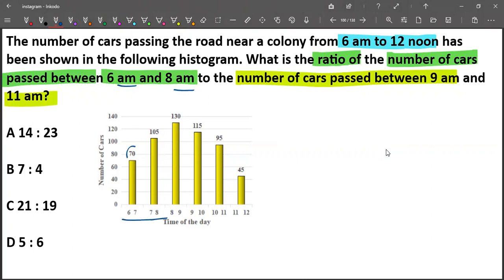So 6 to 7, 7 to 8: 70 and 105, which is 175. Next, 9 to 10, 10 to 11: 115 plus 95, which gives us 210. Put it.